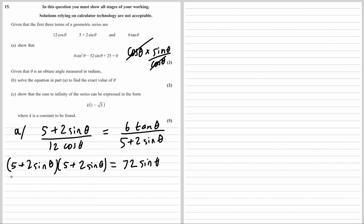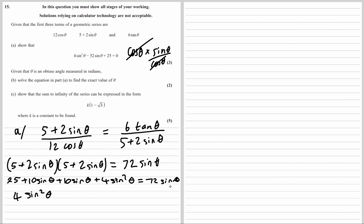Expanding and simplifying the left side: we get 25 plus 10 sine theta plus 10 sine theta plus 4 sine squared theta equals 72 sine theta. Moving everything to the left side with the squared term first: 4 sine squared theta, then 10 plus 10 minus 72 gives minus 52 sine theta, plus 25 equals 0. And that is what we wanted.